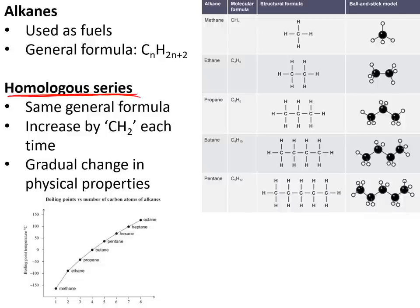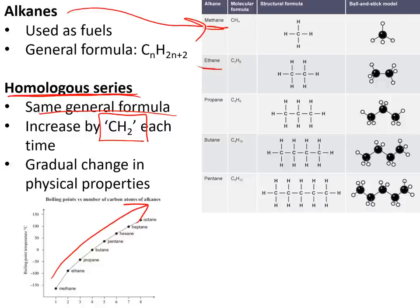A homologous series is a family of closely related compounds with the same general formula, differing only by CH2 each time. They have similar chemical properties and a gradual change in physical properties. The alkanes are one such series — methane (CH4), ethane (C2H6), and propane (C3H8) — with the general formula CnH2n+2. To draw their structure, join the carbons together and fill in hydrogens to give each carbon a total of four bonds.